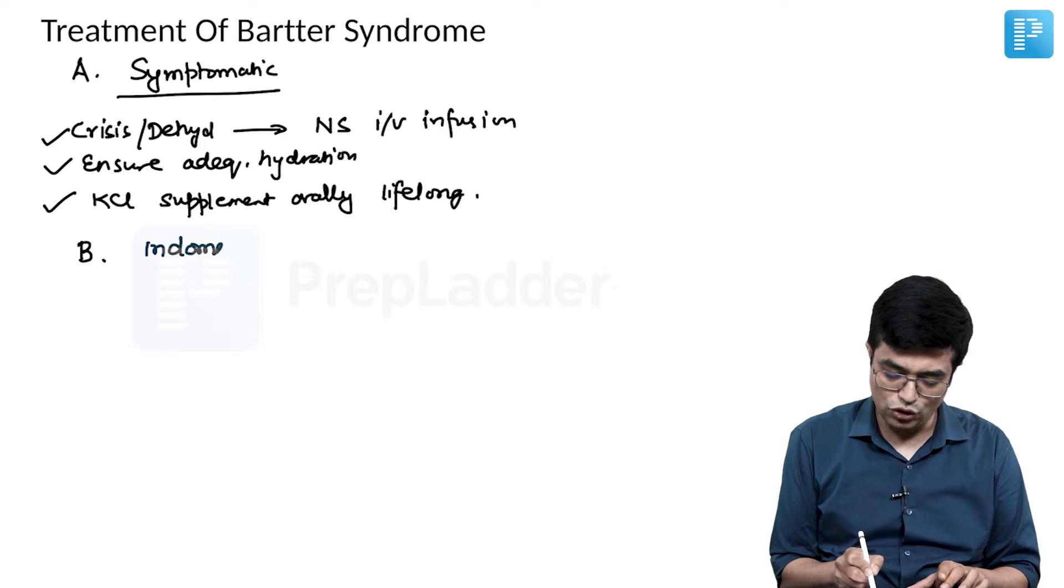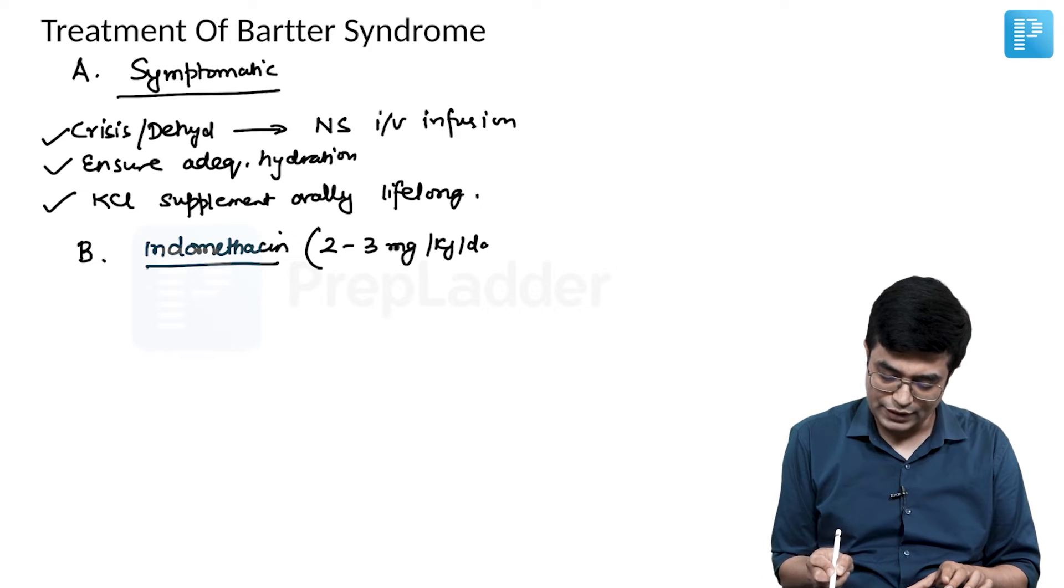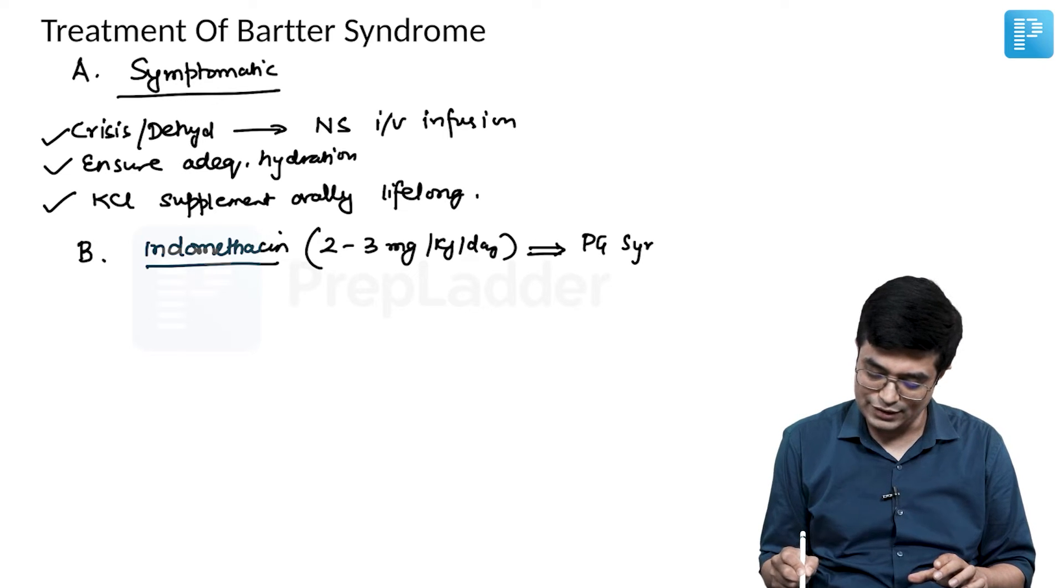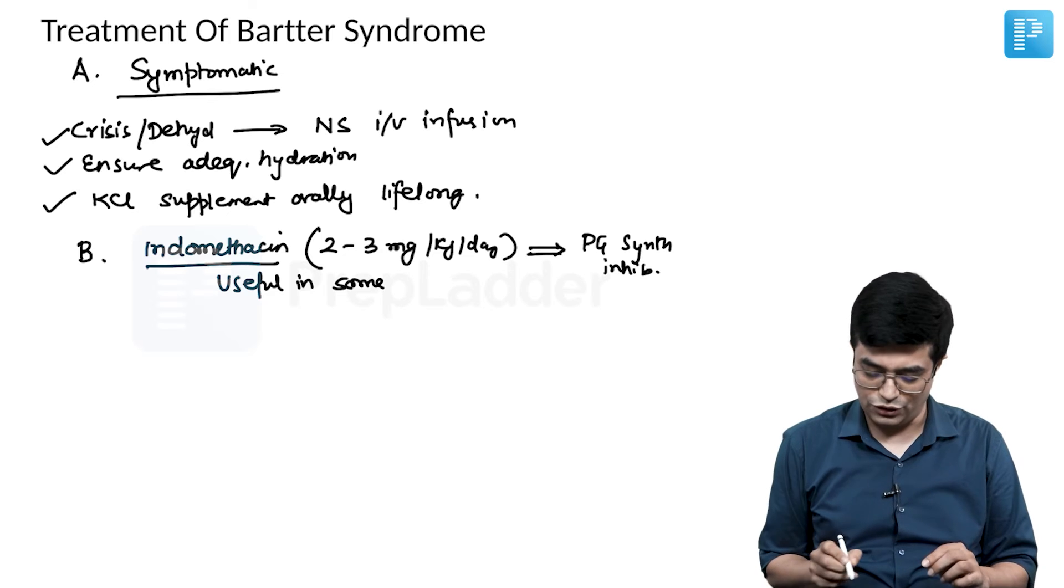The second therapy which can be tried is Indomethacin. Indomethacin is useful in a dose of 2 to 3 mg per kg body weight per day. And it tends to produce some resolution. It is a prostaglandin synthesis inhibitor and has been found useful in some patients, especially those having very high levels of PGE2.